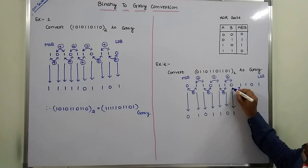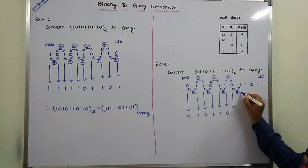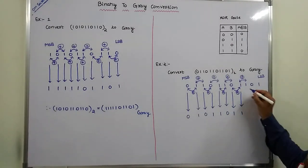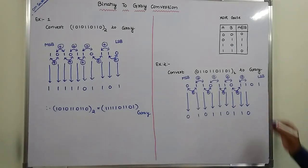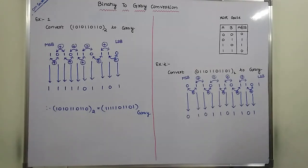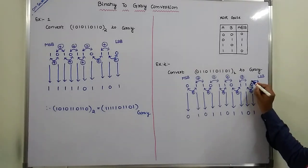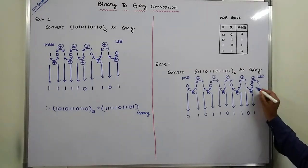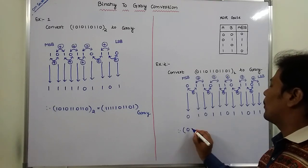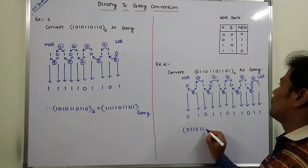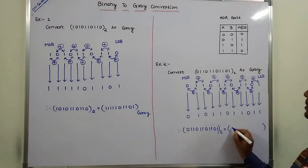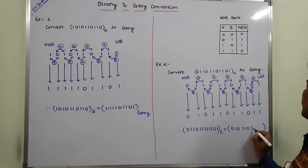Next, we perform the exclusive OR operation between these two bits. Both bits are different, output is 1. Next pair: both bits are different, output is 1. Therefore, for the given binary number 011101101101 base 2, the equivalent grey code number is 010110110 11.